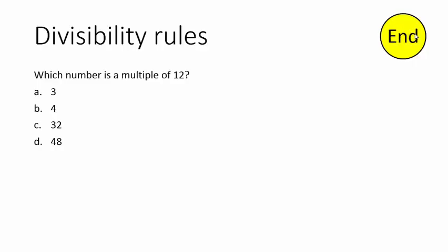Alright, which number is a multiple of 12? The definition of a multiple of 12 would be something that I can divide by 12 and get a whole number. Is this going to be a whole number? No. How about this? No. Is that going to be a whole number? Try it on your calculator — it doesn't look like it. No. 48 divided by 12, you can do that in your head — 4, whole number. 48 is a multiple of 12.